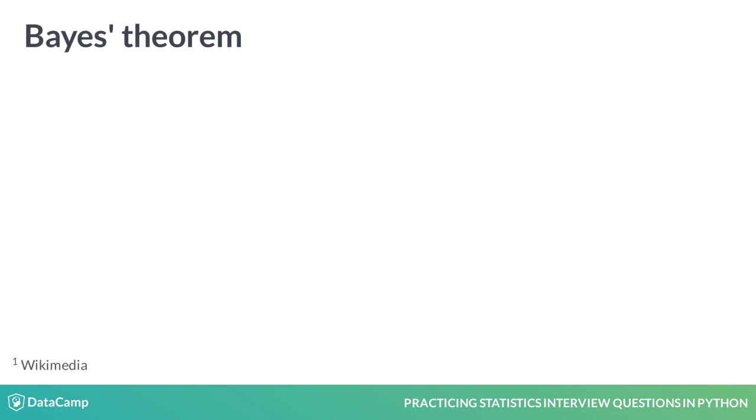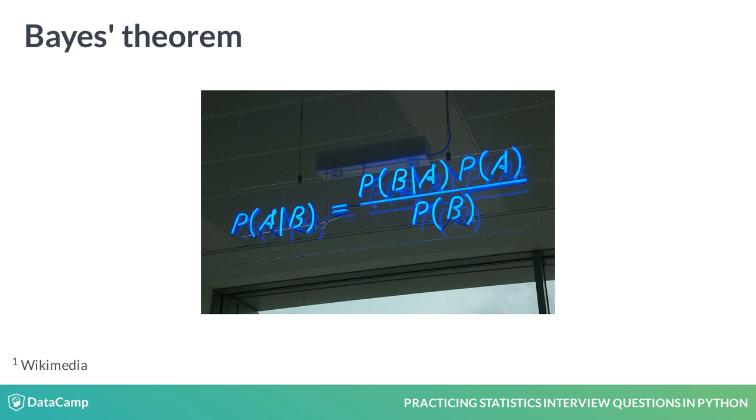While we're on the topic of conditional probabilities, we have to go over Bayes' theorem, a staple in data science interviews. Bayes' theorem helps us tackle probability questions where we already know about the probability of B given A, but we want to find the probability of A given B.